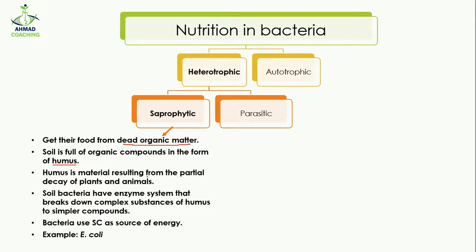Humus is the material that results from the partial decay of plants and animals. For example, when some plant or animal dies and is buried in the soil, after the passage of time that organism or plant becomes partially degraded — not completely, but partially — and in that form it is known as humus.